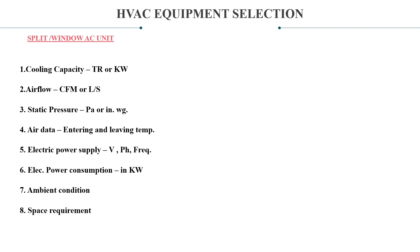Then electrical power consumption — the value will be in kW. The seventh factor is ambient conditions, and the eighth is space requirement. Some equipment will be effective only for certain ambient conditions. For example, in hot humid areas, you cannot simply choose any equipment. The equipment you select should withstand the ambient temperature, ambient air pressure, and the altitude of the location. Space requirement means whether the equipment can be fixed inside the specified space. These factors shall be considered while selecting split or window AC units.